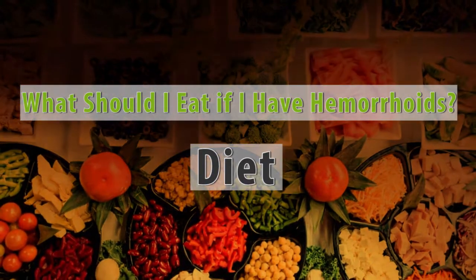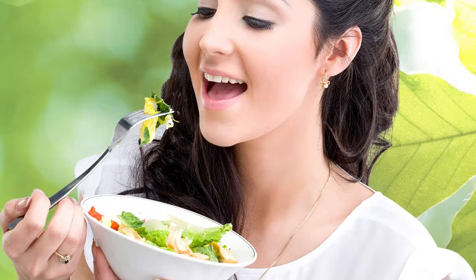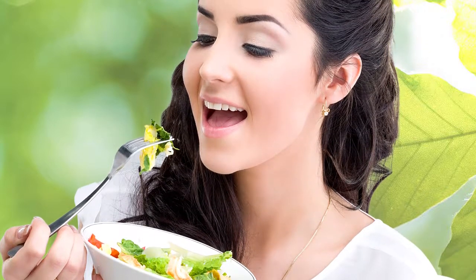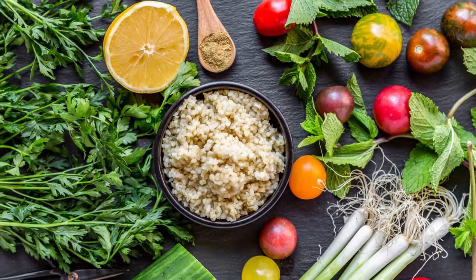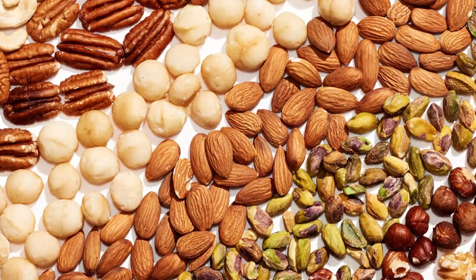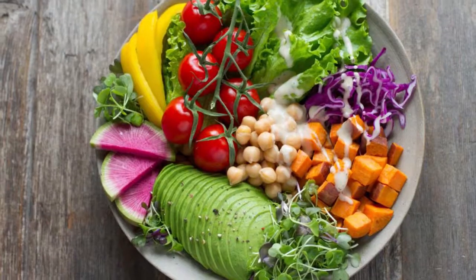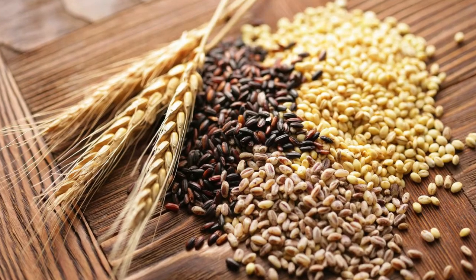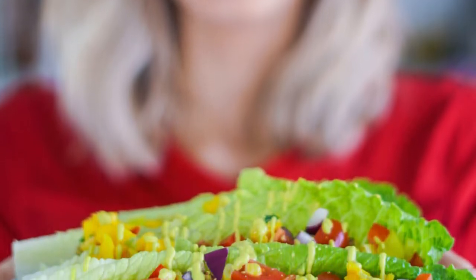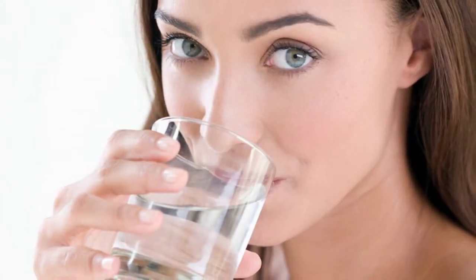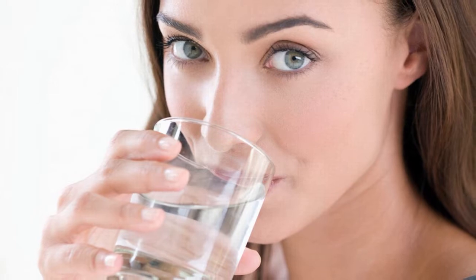Individuals with hemorrhoids should soften their stools by increasing the fiber in their diets. Fiber is found in numerous foods including fresh and dried fruits, vegetables, whole grains, and cereals. In general, 20 to 30 grams of fiber per day is recommended. Stool softeners and increased drinking of liquids may also be recommended.